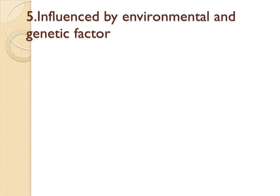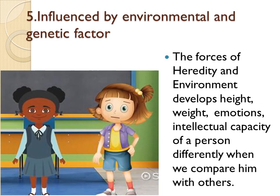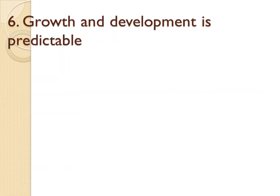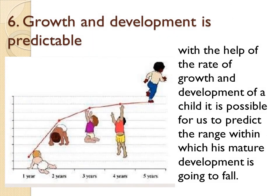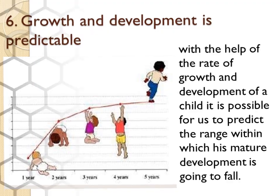The fifth principle is that growth and development are influenced by environmental and genetic factors. Growth and development is a joint product of both heredity and environment. The next principle is that growth and development is predictable. With the help of the rate of growth and development of a child, it is possible for us to predict the range within which his mature development is going to fall.